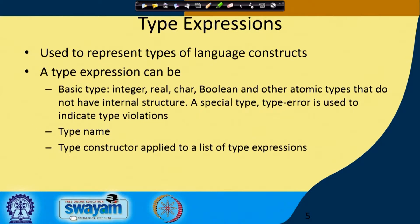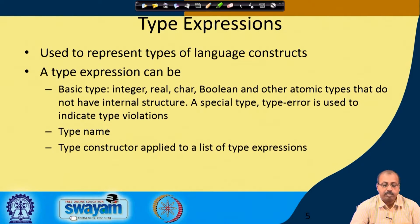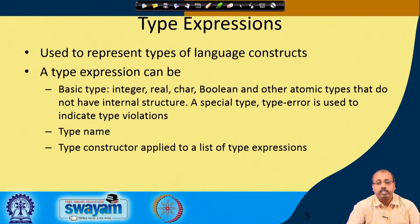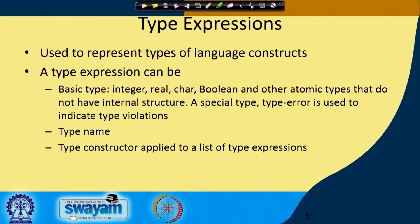Next, we will be talking about type expressions. A type expression, as the name suggests, is an expression involving types. It is used to represent types of language constructs. We will make an expression whose individual elements will be some types, and they will be utilized for representing types of different programming language constructs.